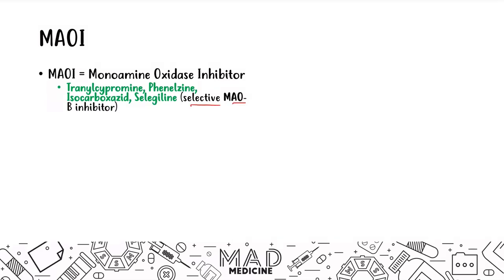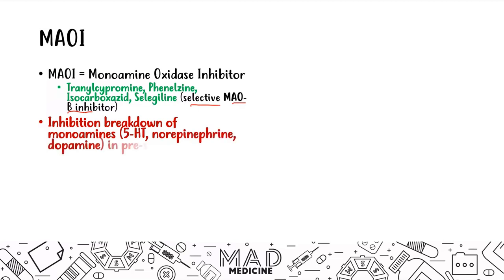Selegiline is a selective monoamine B inhibitor — we'll discuss that in a moment. Monoamine oxidase inhibitors work by inhibiting the breakdown of monoamines. Monoamines are the neurotransmitters most affected in depression: serotonin, norepinephrine, and dopamine. Those are all classified as monoamines.